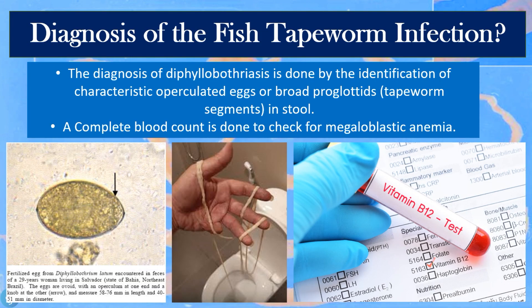The diagnosis of diphyllobothriasis is made by identification of the characteristic operculated eggs or broad proglottids — tapeworm segments — in the stool. The classic operculated egg, such as that of Diphyllobothrium latum found in the feces of a 29-year-old woman in Salvador, northeast Brazil, is ovoid with an operculum at one end and a knob at the other. These eggs measure approximately 58 to 76 micrometers in length and 41 to 51 micrometers in diameter. Large pieces or segments of proglottids may also be found in the stool.